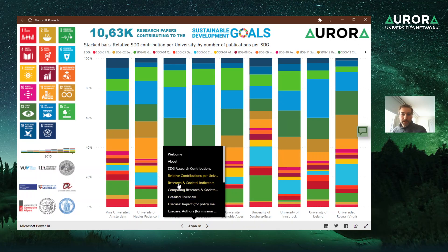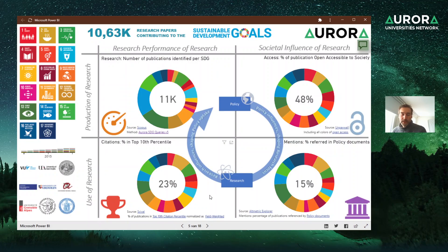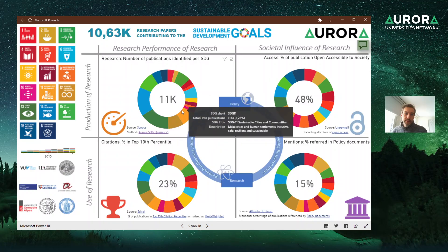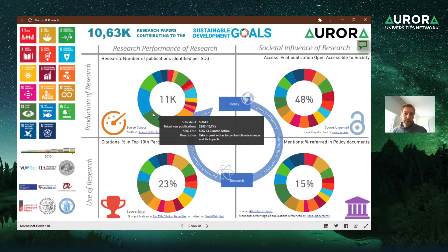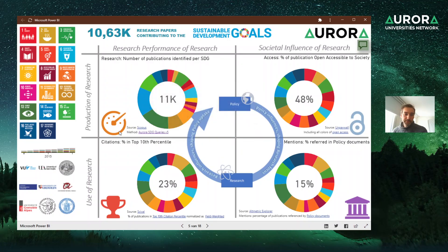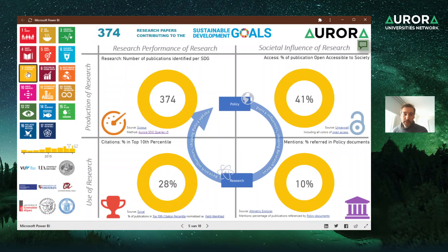Next is the research indicators page. This is an interesting graph because it shows research performance and the societal influence of research for the SDGs. You can see for all universities how many papers are contributing to the SDGs, and hovering over shows for each single SDG how much that is. For example, 374 papers were found, and 28% of those 374 papers are in the top 10 percentile of most-cited publications, field-weighted.